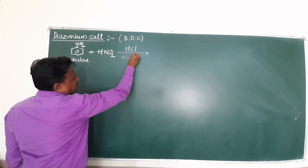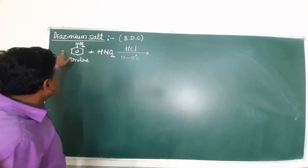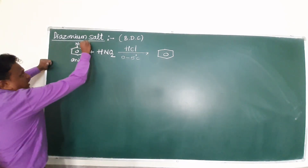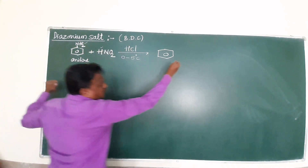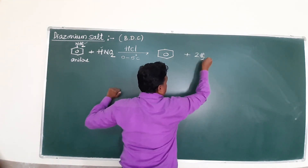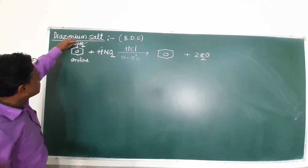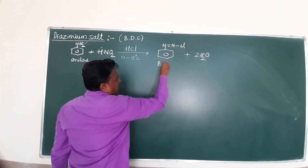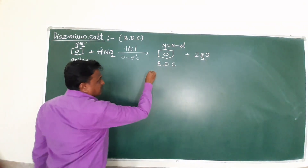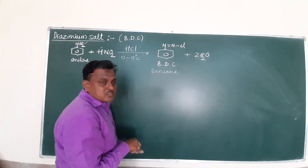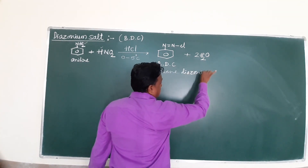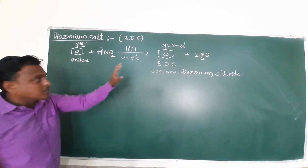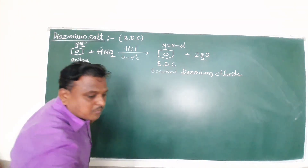This reaction is carried out in the presence of an acidic medium at a temperature of 0 to 5 degrees Celsius. Aniline reacts with nitrous acid to form the product. The reaction releases 2H₂O, and what remains is benzene diazonium chloride — BDC — with N≡N⁺ and Cl⁻. This is benzene diazonium chloride, your diazonium salt.